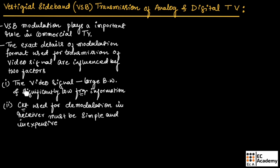The video signals will be having large bandwidth and they are significantly low frequency information. The circuit used for demodulation in the receiver must be simple and inexpensive. That is why we use vestigial sideband transmission in analog and digital television.